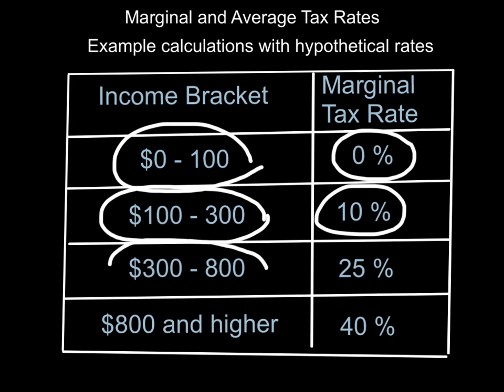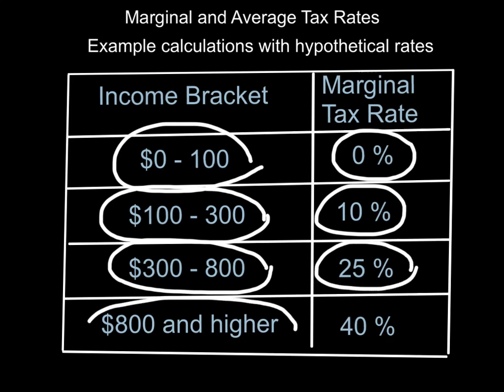Anybody earning between three hundred and eight hundred dollars is going to pay a marginal tax rate of twenty-five percent. Eight hundred dollars and higher, the rate is forty percent.